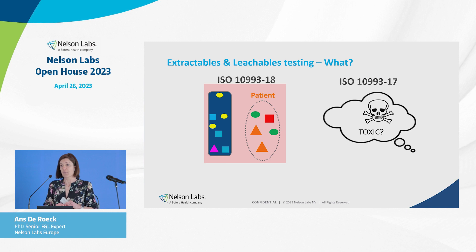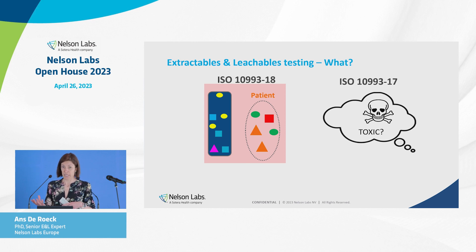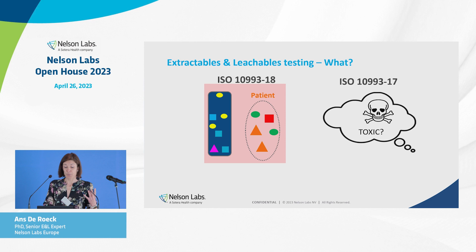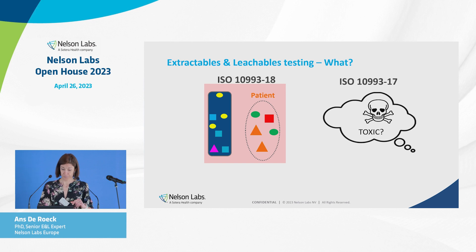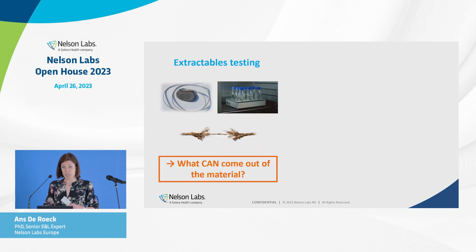Subsequently, a toxicologist is going to evaluate whether these compounds at these concentrations are harmful for the patient or not — that's done using ISO 10993 Part 17. I will talk about Part 18, and one of the coming speakers will cover Part 17. So what is now the difference between extractables testing and leachables testing?